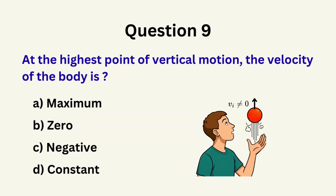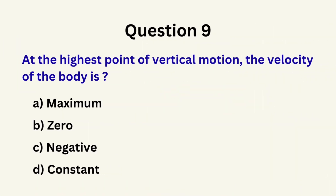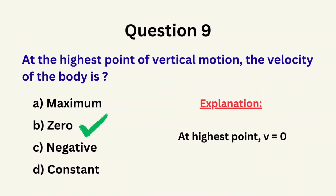Question 9: At the highest point of a body's vertical motion, the velocity of the body is... A. Maximum, B. Zero, C. Negative, D. Constant. The correct answer is B: zero.